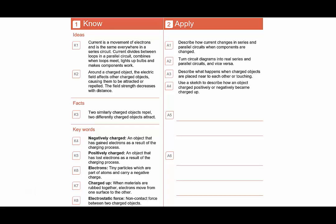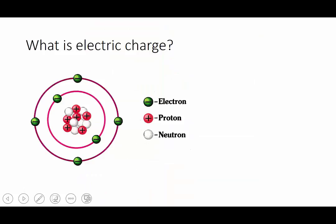We're going to start by looking at what electric charge is, and for that we need to know about the structure of an atom. An atom is made up of three types of particles, the first of which is the electron, which is found around the outside of the atom. The electron has negative charge.